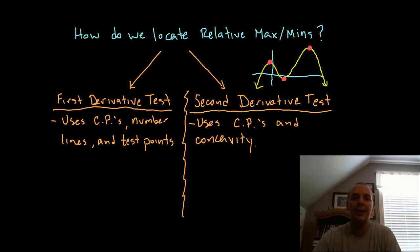The other technique is called the second derivative test. It also works well, it uses critical points as well, but to determine if the critical points are maximums or minimums it doesn't use number lines, it doesn't use test points. Instead it uses the notion of concavity.